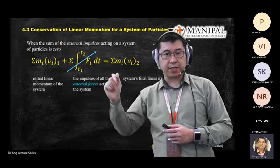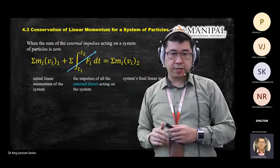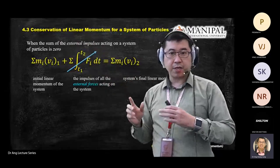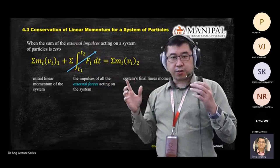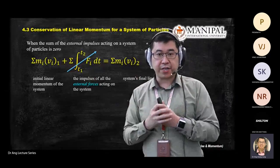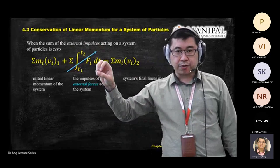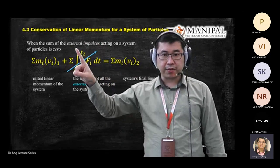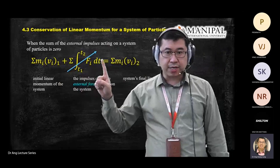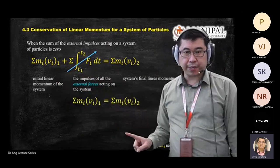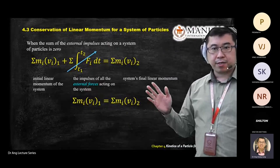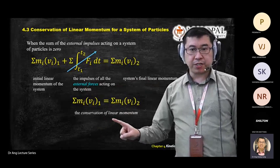When we talk about conservation of linear momentum, there is no longer an external force. When the system is conserved — meaning there's no loss of energy — then the external force impulse is not there. There's no impulse when you have conservation of momentum, so you can cancel out the impulse. Your equation becomes: momentum before equals momentum after.